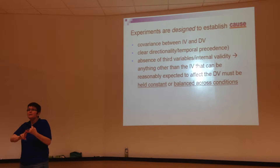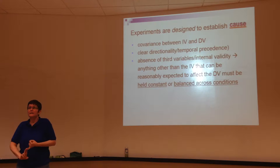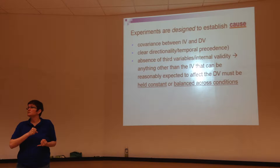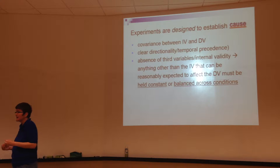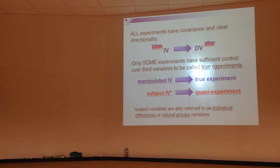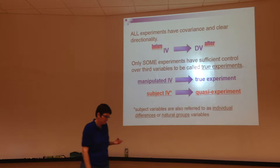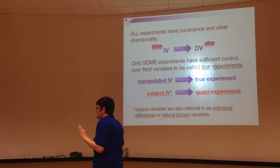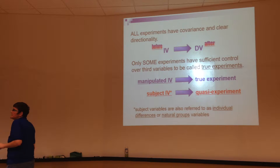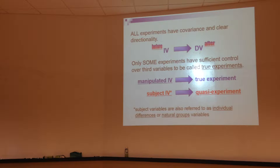So I've got the choice: I can manipulate the independent variable, and for other variables aside from my dependent variable, I have the choice of holding them constant or balancing them across conditions. All experiments have covariance and directionality. Where experiments vary is in how much control the researcher has over the independent variable.